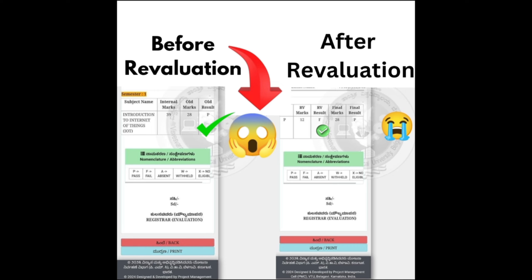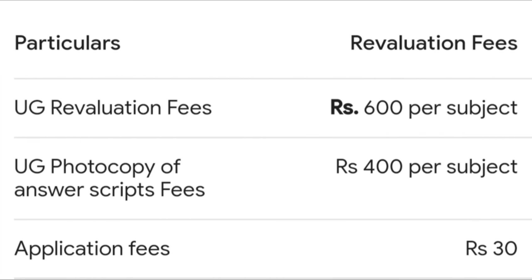Regarding revaluation fees: UG revaluation fees is rupees 600 per subject. If you also want the photocopy of answer scripts, you pay an extra 400 rupees, making it 1000 rupees, plus an application fee of 30 rupees — so 1030 rupees total for photocopy with revaluation. Without photocopy, it is 600 plus 30, which is 630 rupees.